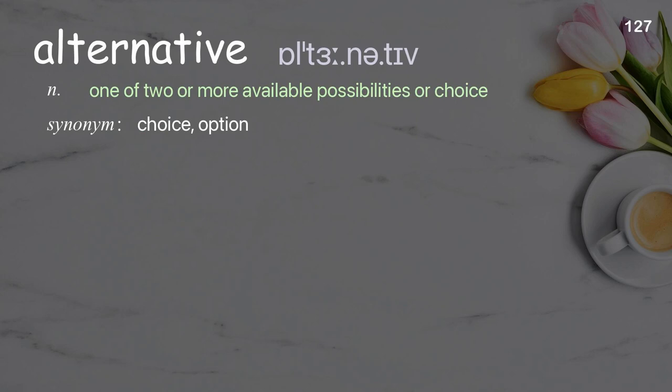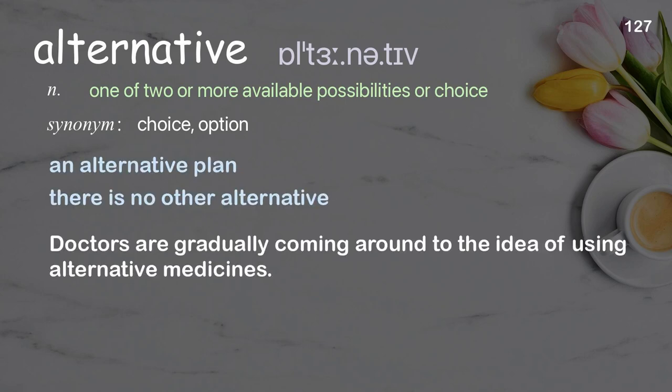Alternative: One of two or more available possibilities or choices. Examples: An alternative plan. There is no other alternative. Doctors are gradually coming around to the idea of using alternative medicines.